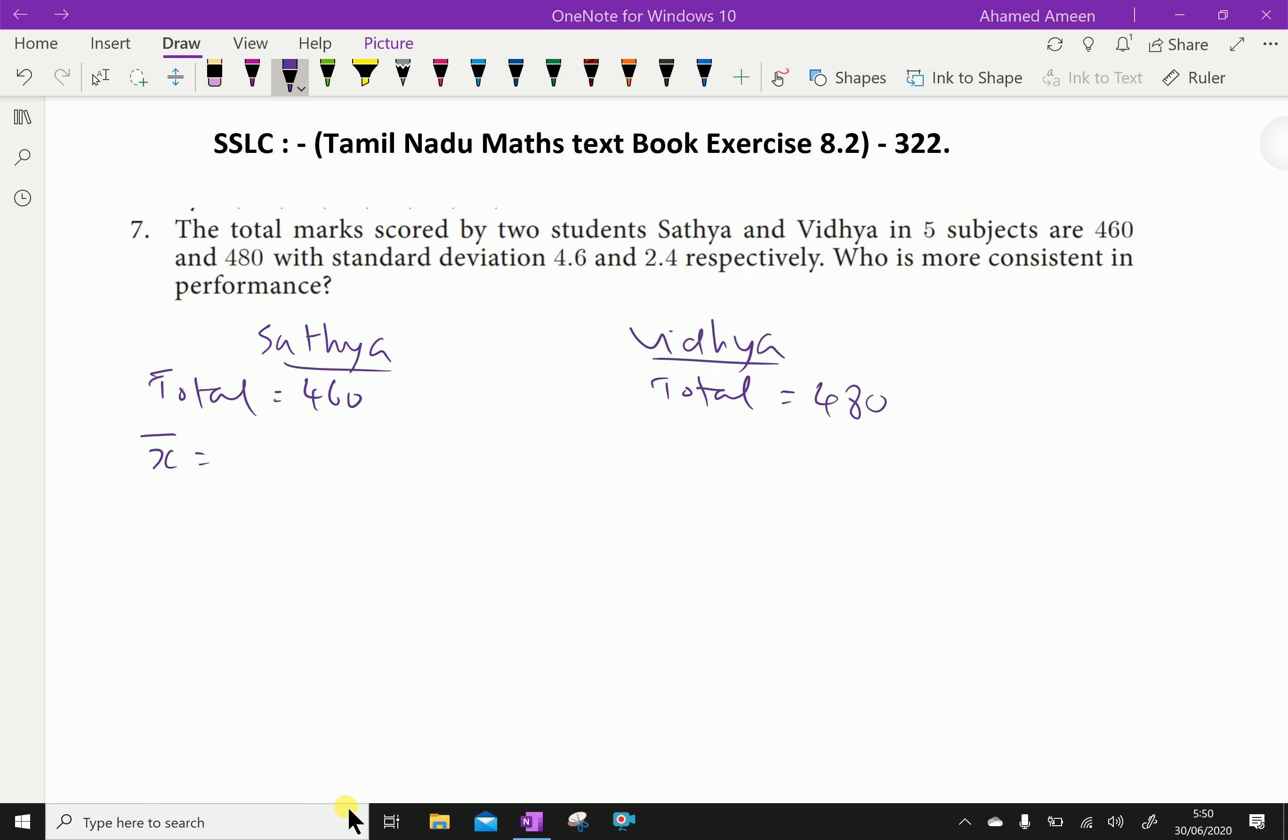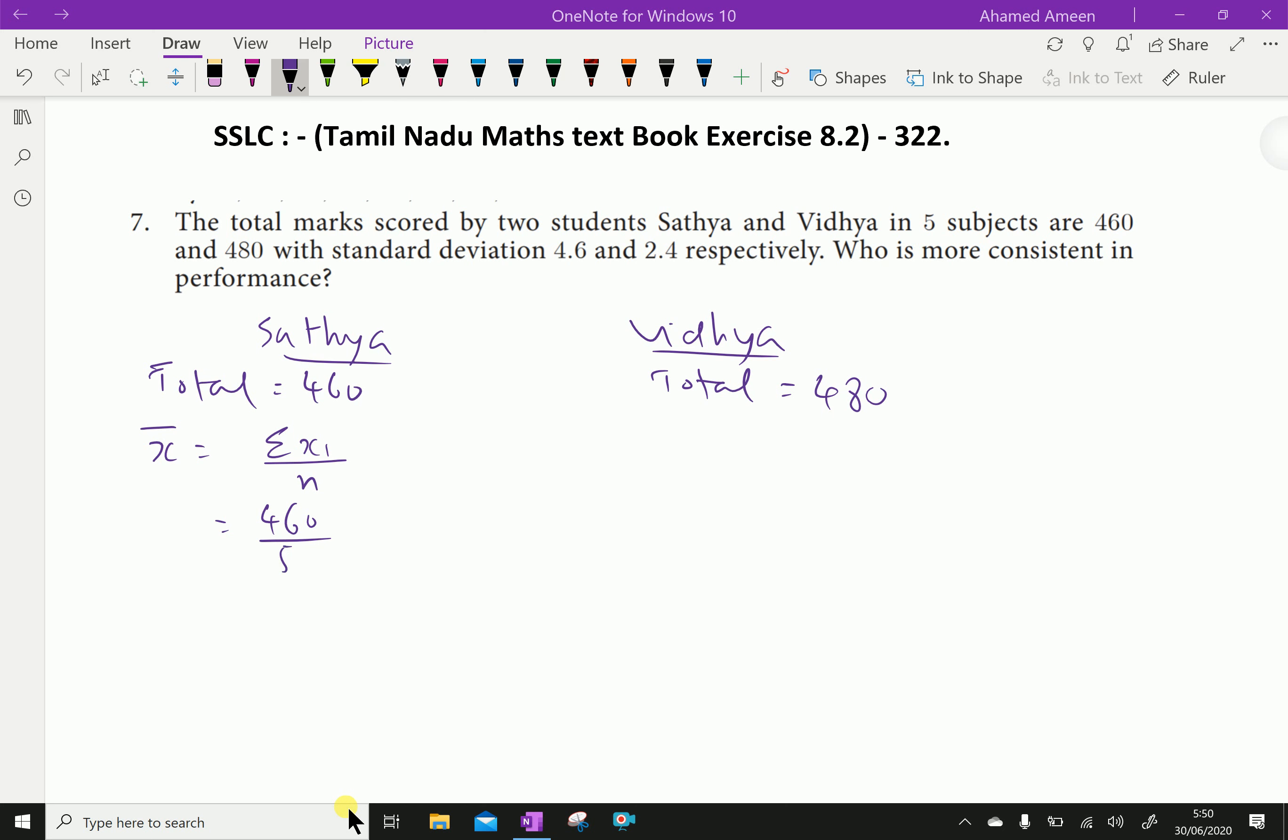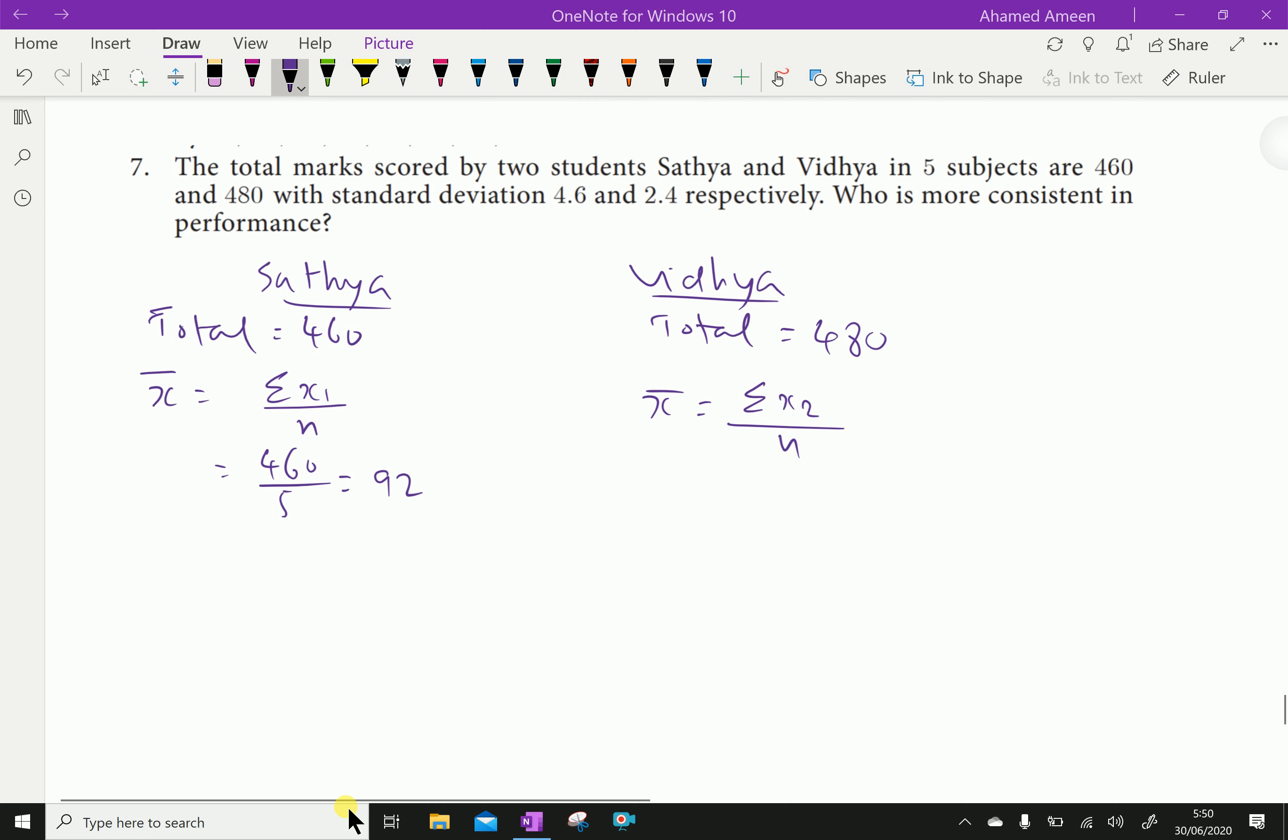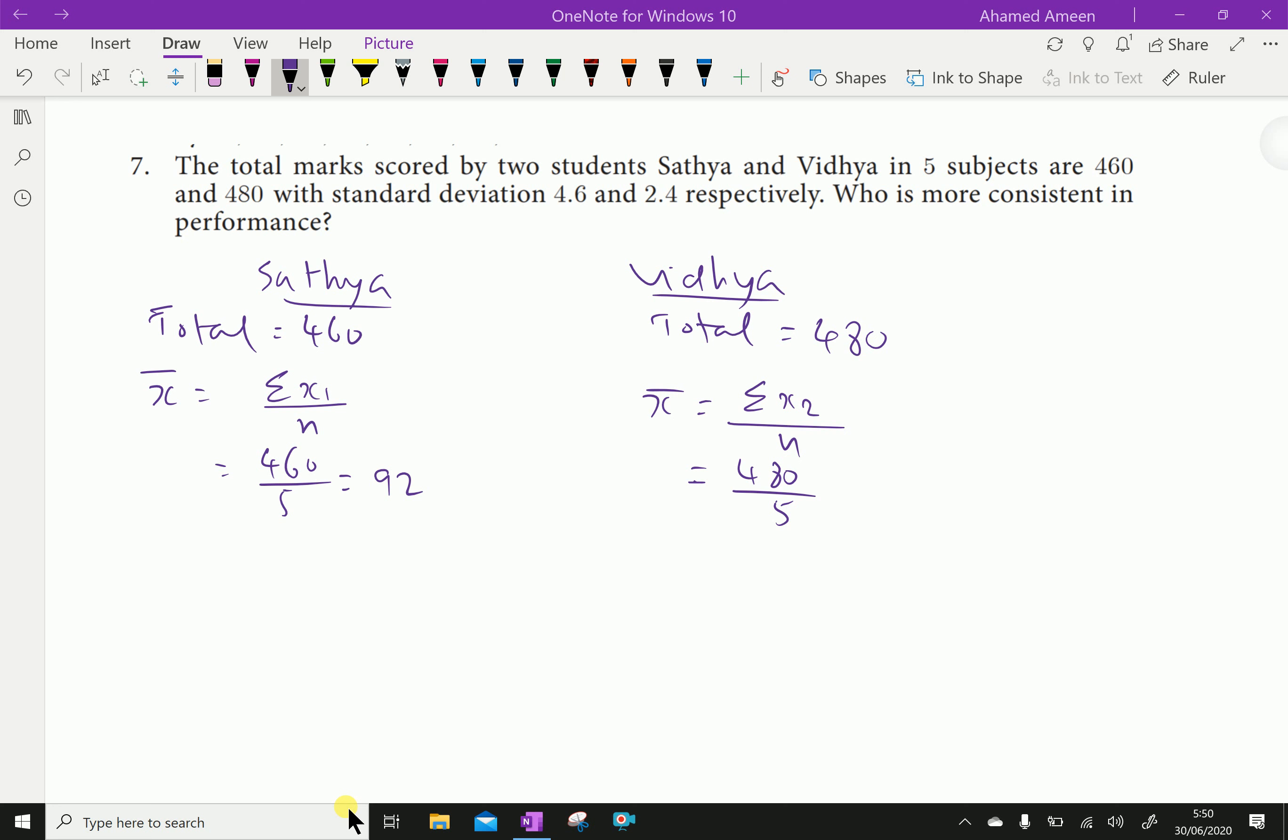x bar, that is mean, equals sigma x1 over n which equals 460 divided by five, which equals 92. This side, x bar equals x2 over n which equals 480 by five which equals 96.